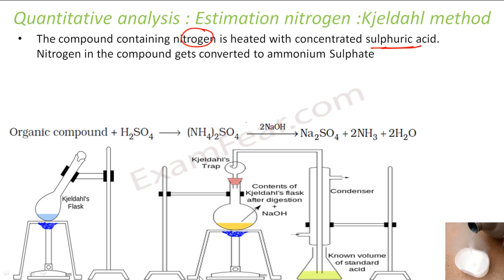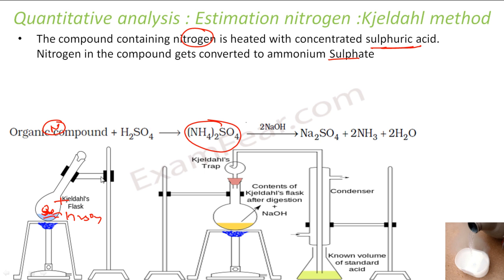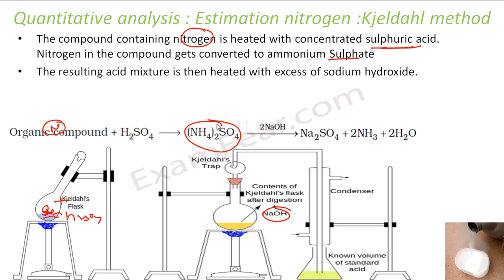The compound is heated with concentrated sulfuric acid, and the nitrogen in it gets converted to ammonium sulfate. This flask contains the organic compound with H₂SO₄, and what you get is ammonium sulfate. You then put the output into another flask called the Liebig trap and add sodium hydroxide. This step is called digestion.